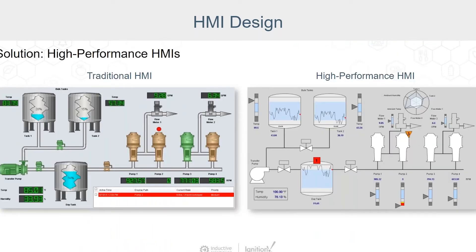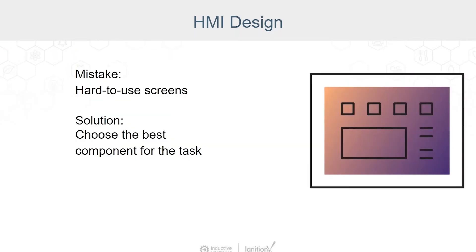Another solution for hard-to-read screens is the high-performance HMI. Here's a comparison of a traditional HMI versus a high-performance HMI. The goal is to help the viewer make the best decision in the shortest amount of time after interacting with the HMI. This design typically uses grayscale colors rather than the traditional graphics and bright colors for their displays. The critical states should stand out.